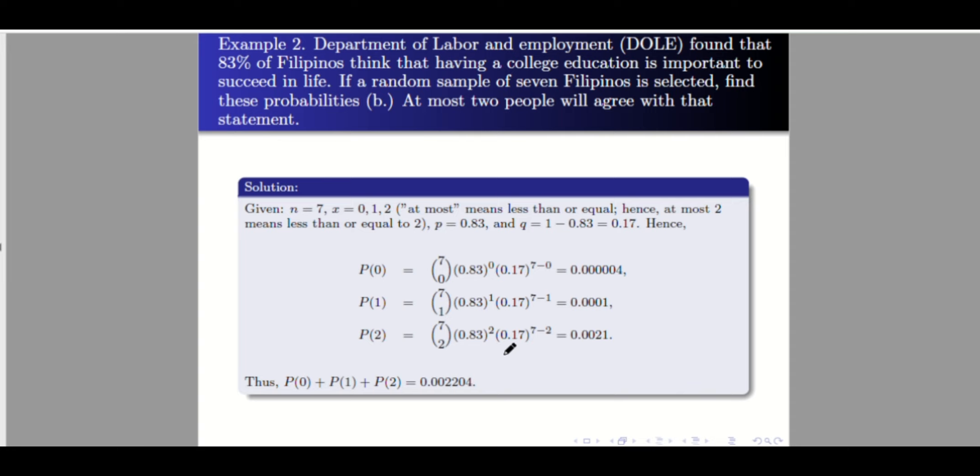The probability that at most two people will agree with that statement is 0.002204 — it is very small. It is good that only a small number of people do not agree with that statement.